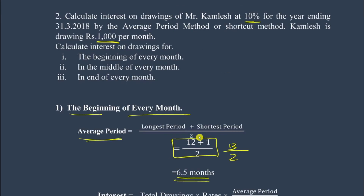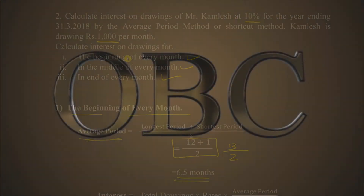So, following all three methods: beginning of month gives 650 rupees, middle of month gives 600 rupees, end of month gives 550 rupees. Very simple. If you found this helpful, please like, share, and subscribe. See you in the next video. Bye!